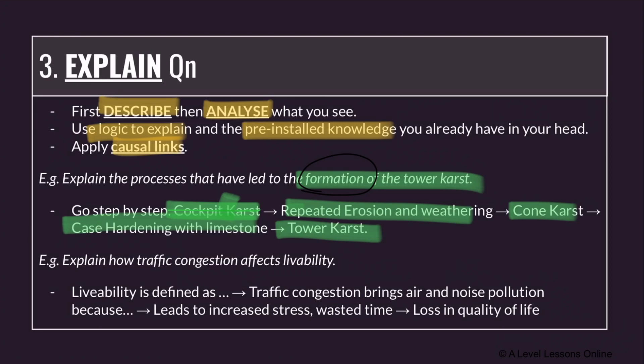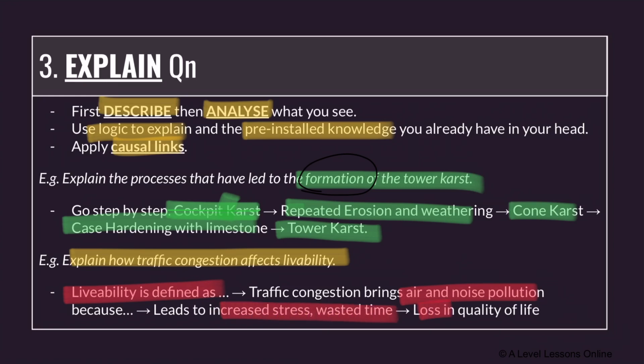Another explain example: explain how traffic congestion can affect livability. First, define livability for the examiner. Then link: traffic congestion brings air and noise pollution, which leads to increased stress and wasted time, hence a loss in quality of life. Everything links together — this is what we call a causal link. Make sure your explanation has logical flow throughout.